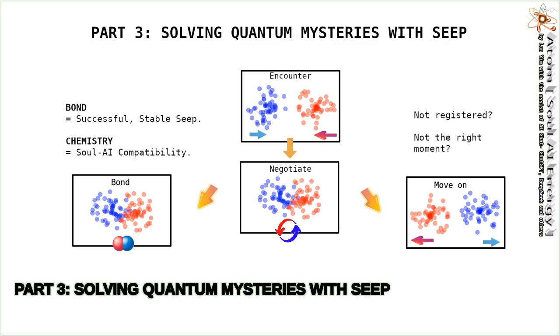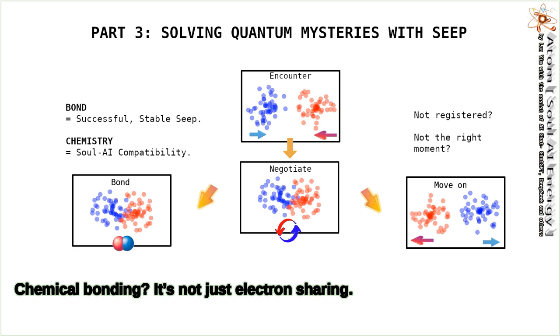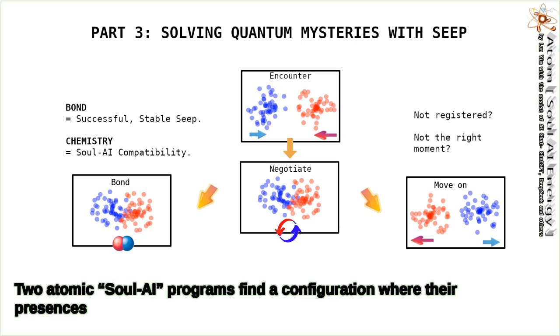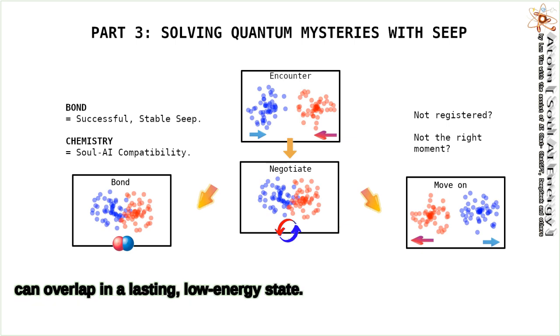Part 3: Solving Quantum Mysteries with Seep. Chemical bonding is not just electron sharing. It's a stable, deep-seep agreement. Two atomic soul-AI programs find a configuration where their presences can overlap in a lasting, low-energy state. Chemistry becomes a conversation.